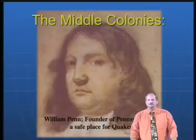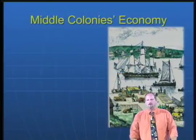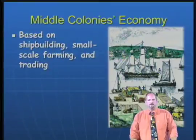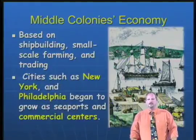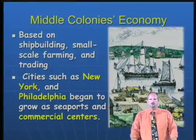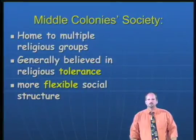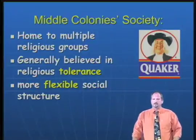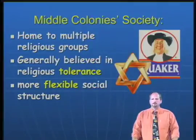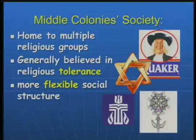When it came to the Middle Colonies, they were a little different, though their economy was somewhat similar — shipbuilding, small-scale farming with slightly better soil and a slightly longer growing season, and a great deal of trade. Large cities such as New York and Philadelphia began to grow as seaports and commercial centers. Home to multiple religious groups including Quakers, Jews, Presbyterians, and Huguenots, they generally believed in religious tolerance and therefore had a more flexible social structure.